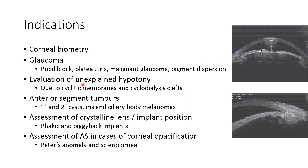It can be used in the evaluation of unexplained hypotony due to cyclic membranes and cyclodialysis clefts. It can be used in imaging anterior segment tumors like primary and secondary cysts, iris and ciliary body melanomas. This picture shows ultrasound biomicroscopy of a case of ciliary body melanoma.